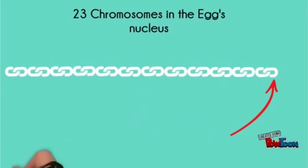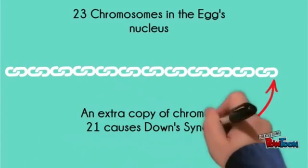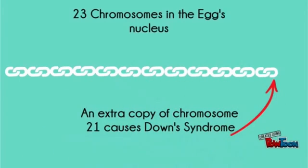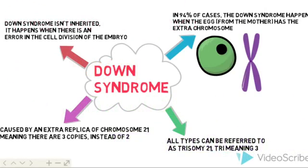In the egg or sperm cell, there are 22 normal chromosomes, called autosomes, and one which affects the gender of the baby. Down's Syndrome is always caused by a replica of chromosome 21. It normally occurs when the egg cell has two copies rather than one. It isn't inherited and is caused when there is an error in cell division of the gametes or the embryo.